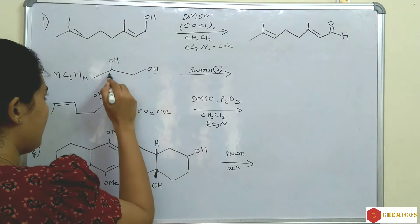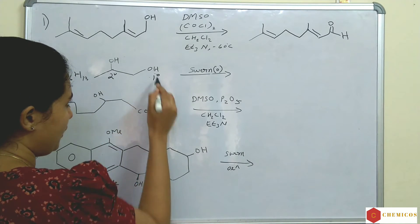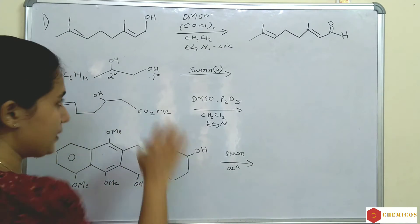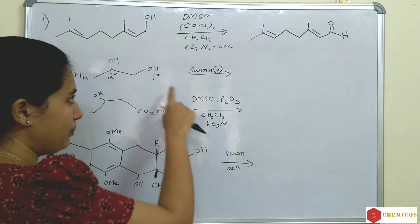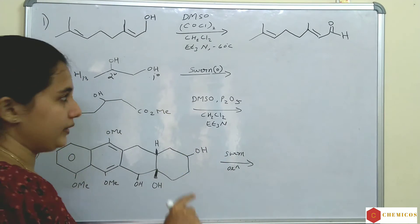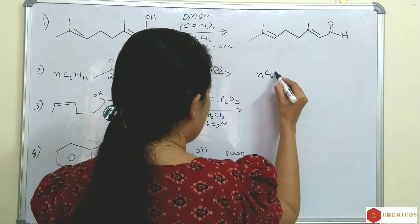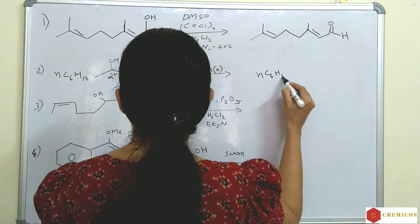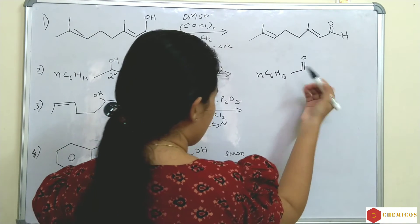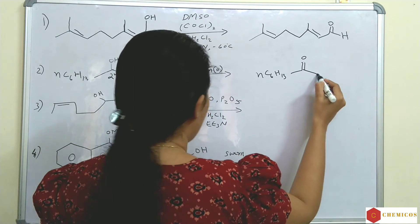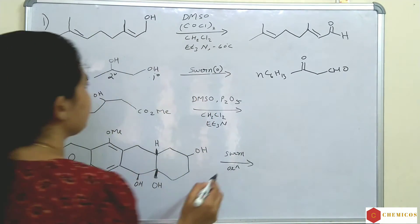Second example: this is a secondary alcohol and this one is a primary alcohol. Secondary alcohol is converted to ketone and primary alcohol is converted to aldehyde. So C6H13 — the secondary alcohol becomes a ketone — and the primary alcohol end becomes CHO.